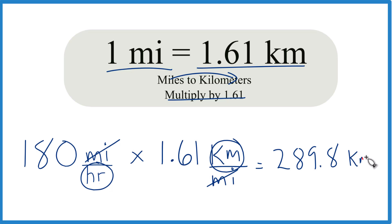That's what we're looking for, kilometers per hour. So when we convert 180 miles per hour to kilometers per hour, we end up with 289.8 kilometers per hour.